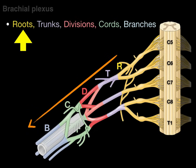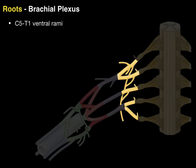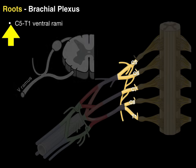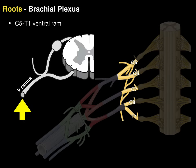Now let's start with the roots. The roots of the brachial plexus are really another way of saying the C5 to T1 ventral rami — C5, C6, C7, C8, and T1. So the roots of the brachial plexus are the same thing as the ventral rami at each of those segmental levels.